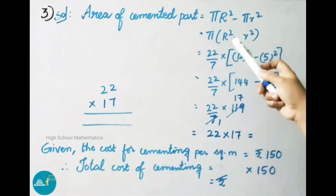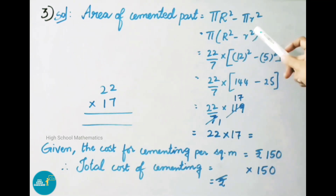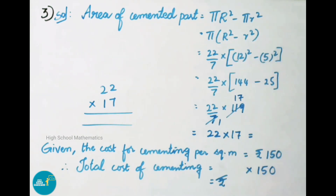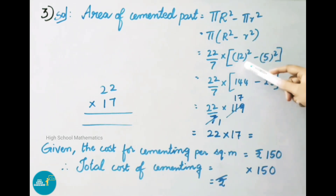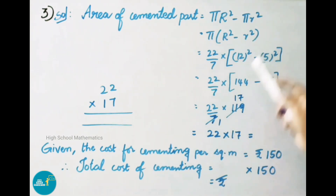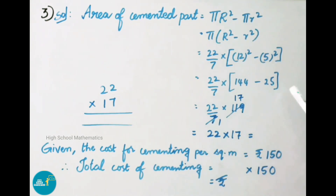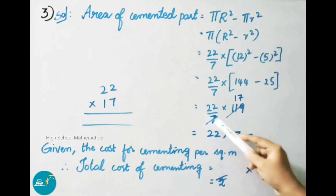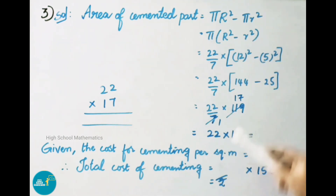Area of cemented part = area of total water fountain − area of fountain arranged portion = π·R² − π·r² = π(R² − r²) = 22/7 into (12² − 5²) = 22/7 into (144 − 25) = 22/7 into 119.